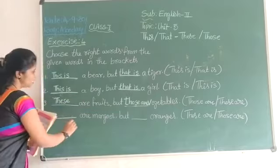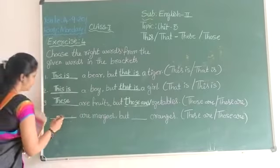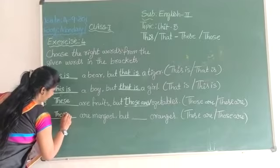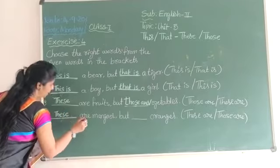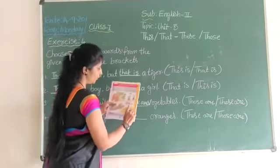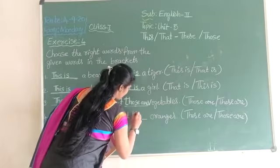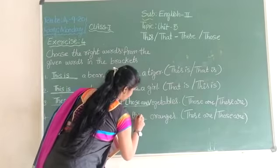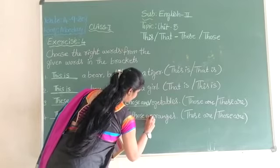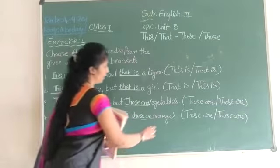Blank, a mango — these are mangoes. T-H-E-S-E, these are mangoes. But those are sweet fruits and are far away, so those — T-H-O-S-E. Those are oranges.